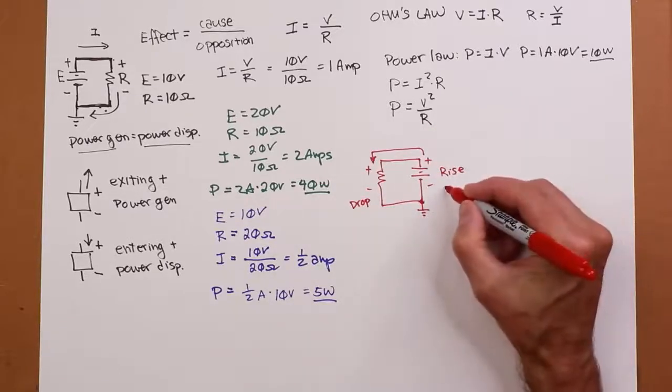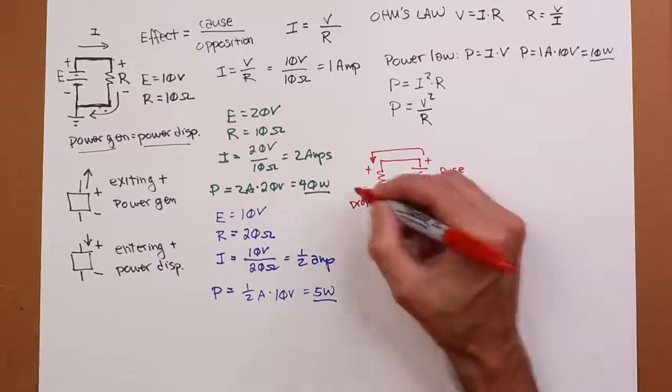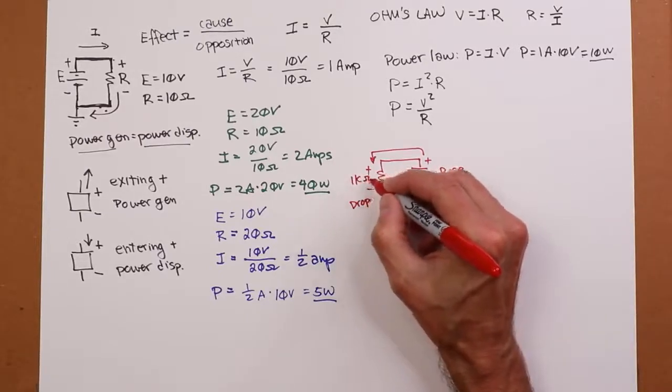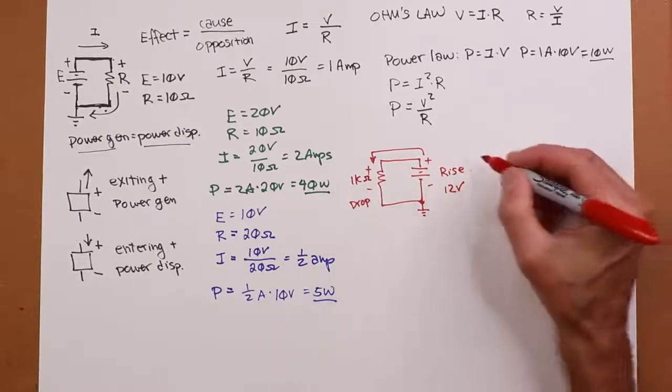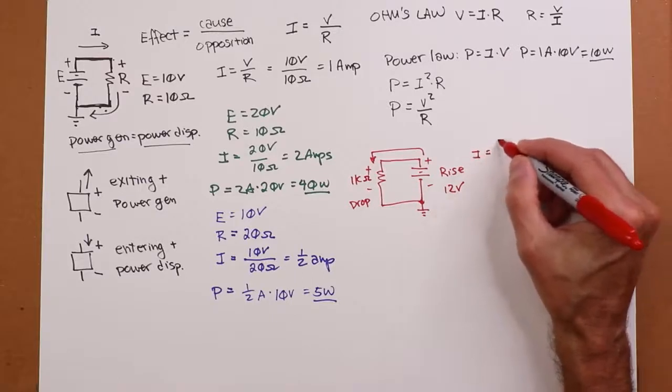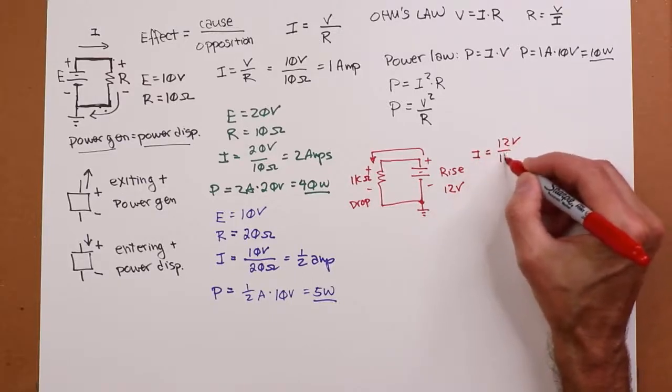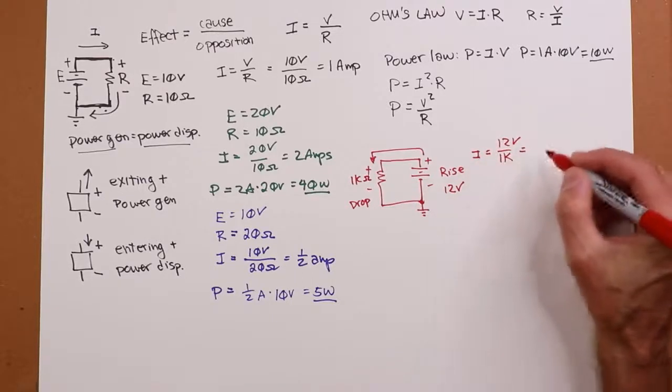So we could just throw other numbers in here. I could say, well, this is 12 volts, this is 1k ohm. So what's the current? Well, it's 12 volts over 1k, 12 milliamps.